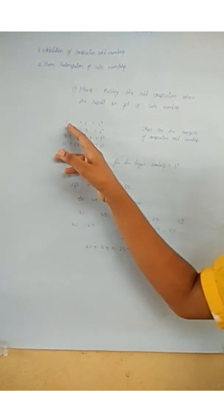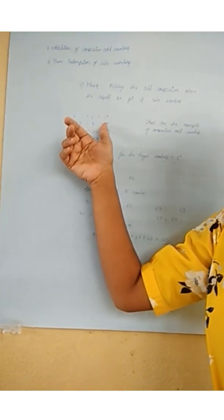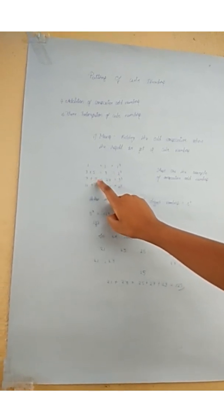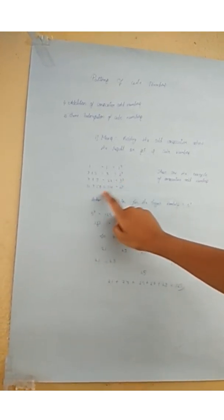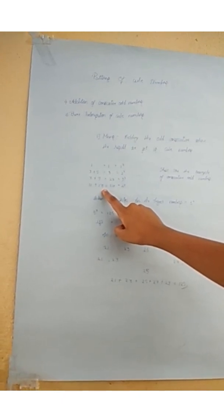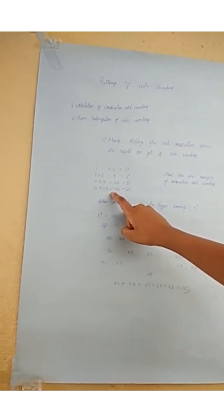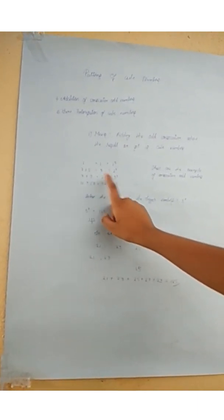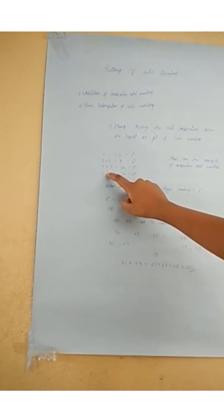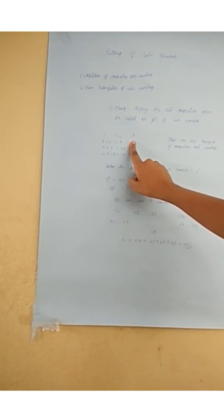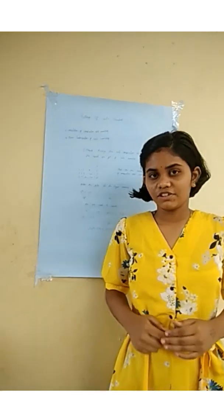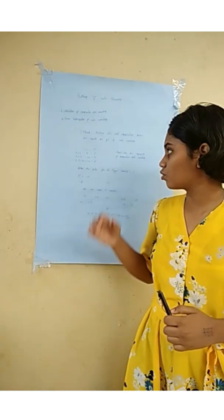For example: 1 equals 1 cube; 3 plus 5 equals 8, that is 2 cube; 7 plus 9 equals 27, that is 3 cube; 11 plus 13 plus 15 equals 64, that is 4 cube. All the consecutive odd numbers combine to give cube numbers.